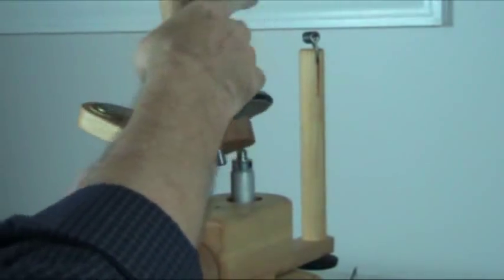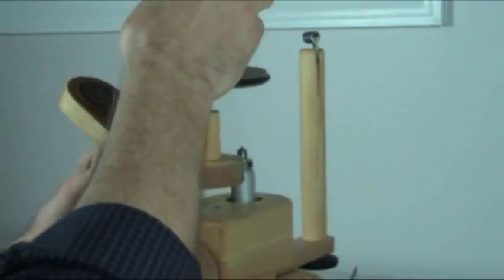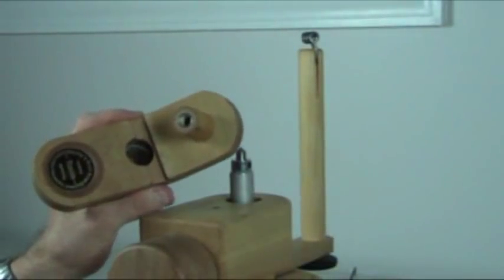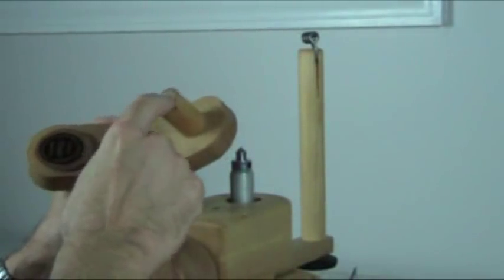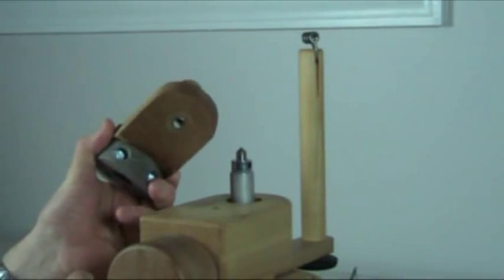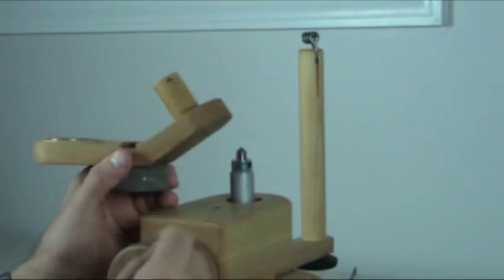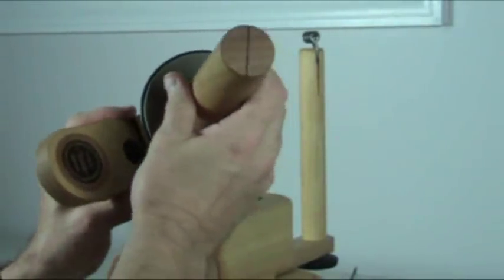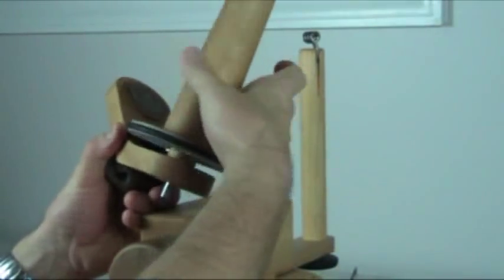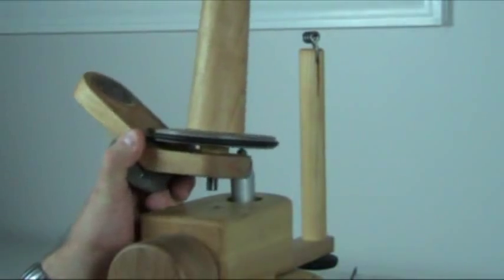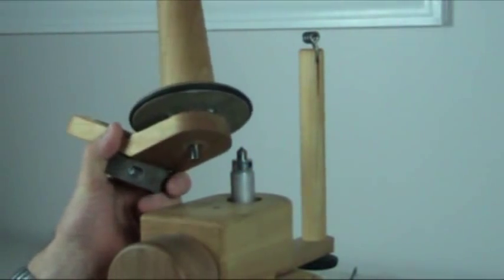You can see that it spins freely. There are two bearings inside this dowel housing here, and occasionally they get out of alignment. And if they ever do, you'll notice that the unit won't spin freely. So if you have that problem, please give us a call. We can tell you how to correct that.